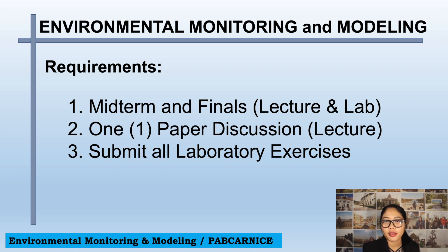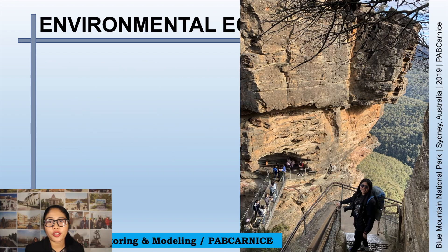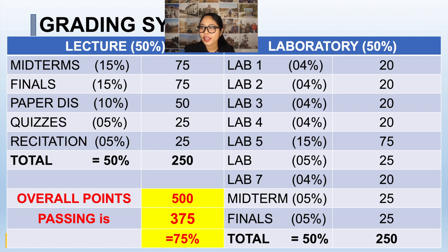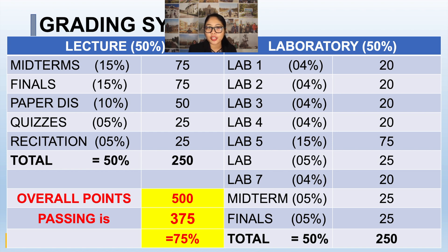For requirements, you must pass the midterm and final exams for both lecture and lab. You also have one paper discussion for the lecture and must submit all laboratory exercises. For the grading system: 50% is for the lecture and 50% for the laboratory. Within the lecture: major exams are 30%, paper discussion is 10%, quizzes are 5%, and recitation is 5% — totaling 50%.